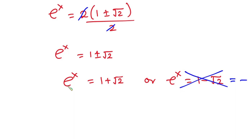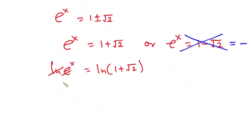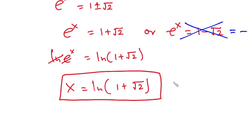Considering the first equation, let's introduce natural log on both sides. So we have natural log of e to the power x is equal to natural log of 1 plus square root of 2. The natural log and e undo each other, so x is equal to natural log of 1 plus square root of 2. This is our final answer.